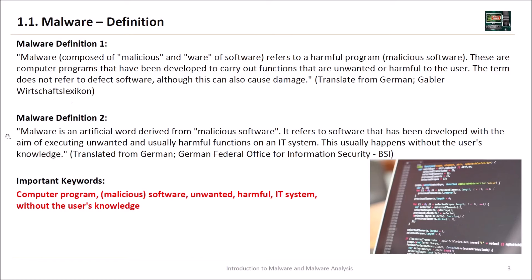The second definition is from the BSI. Malware is an artificial word derived from 'malicious software.' It refers to software developed with the aim of executing unwanted and usually harmful functions on an IT system — usually without the user's knowledge. The important keywords are: malware are computer programs, it is malicious software, it is unwanted and harmful, it attacks IT systems, and often happens without the user's knowledge.